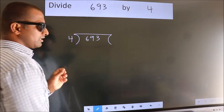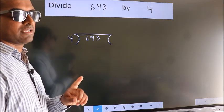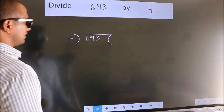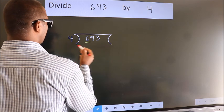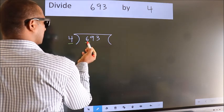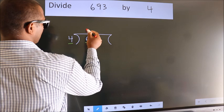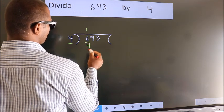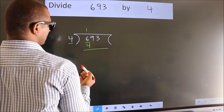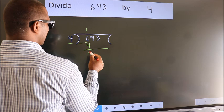This is your step 1. Next, here we have 6, here 4. A number close to 6 in the 4 table is 4 once 4. Now we should subtract. We get 2.